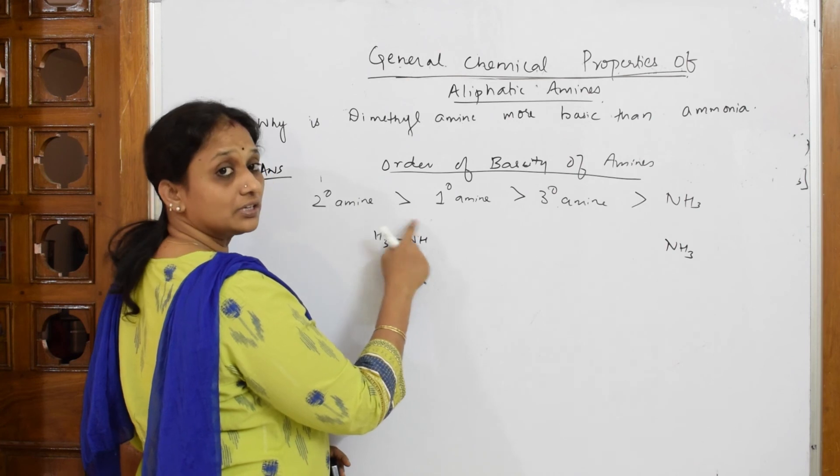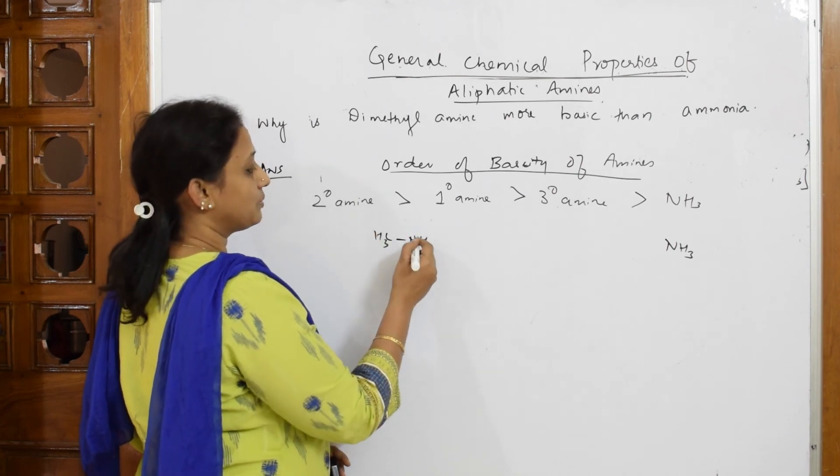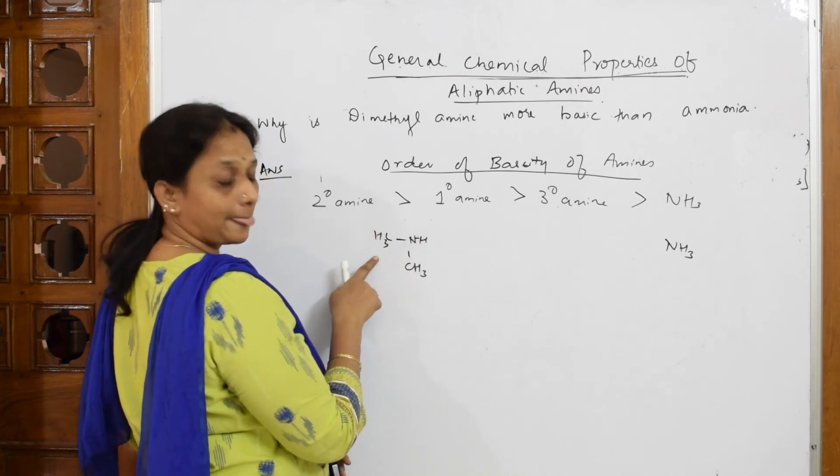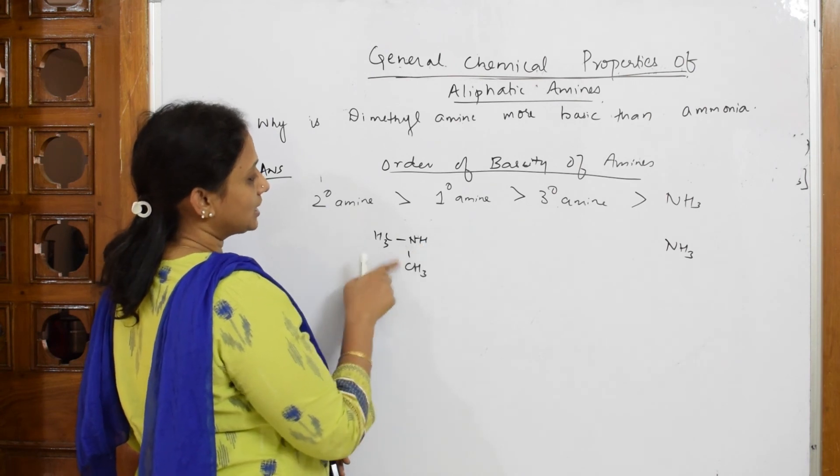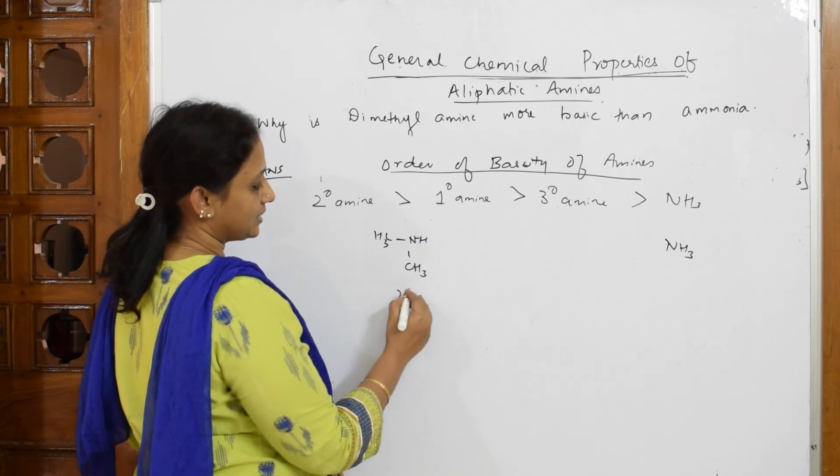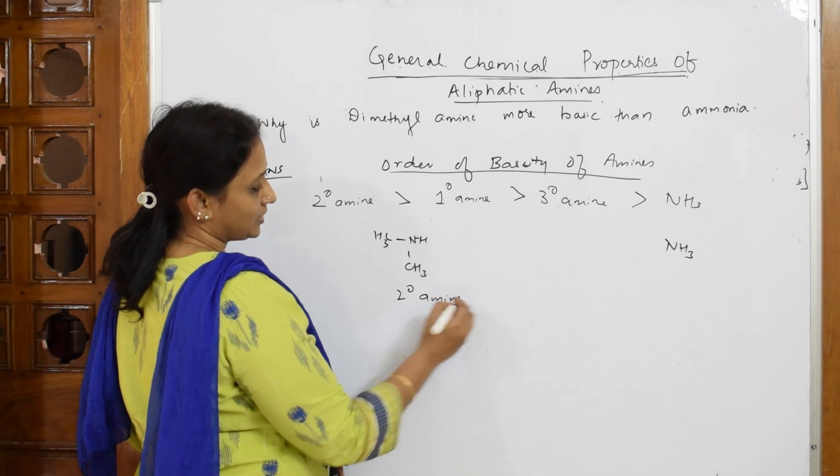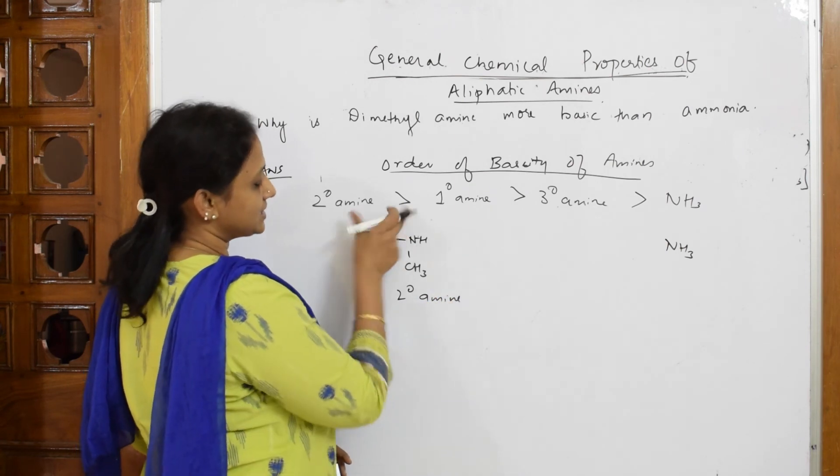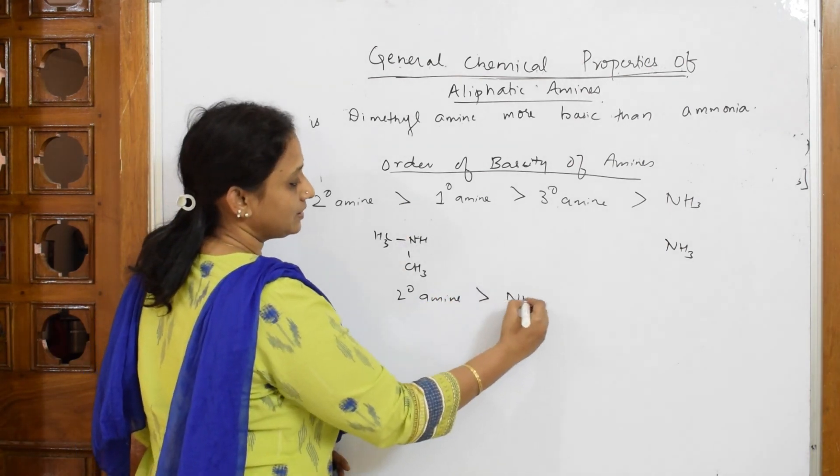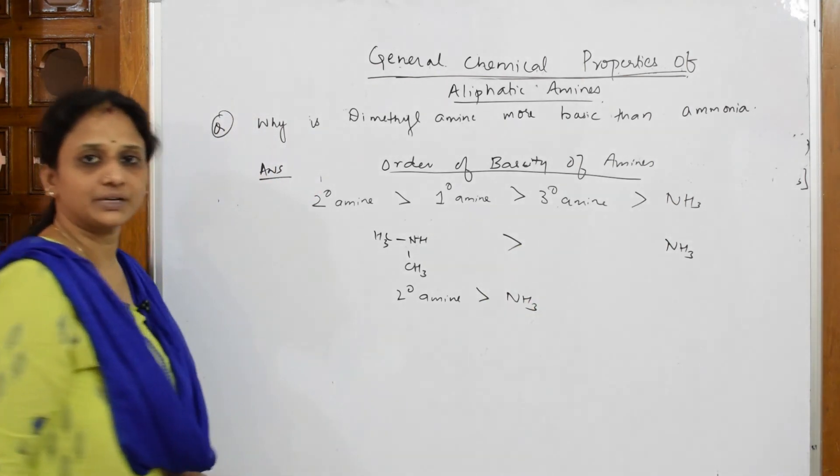Because you have a lone pair of electrons here. Remember, what type of amine is this? Two alkyl groups and one hydrogen. Two alkyl, one hydrogen is which amine? Secondary amine. Obviously, secondary amine, as I said, greater basicity than ammonia. This is how you will do it.